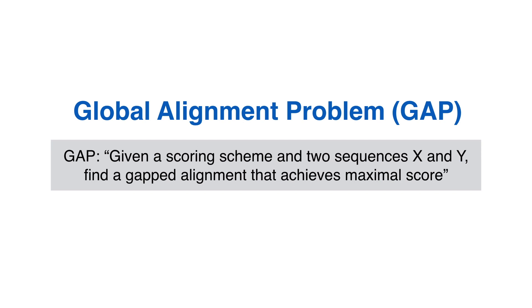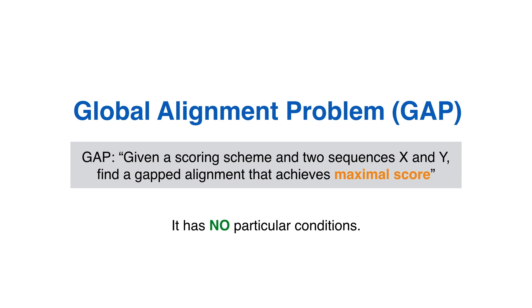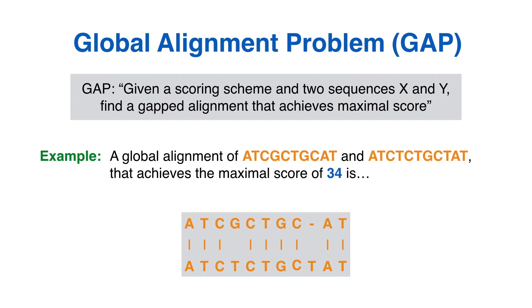This is the base pairwise sequence alignment problem. It has no particular conditions. It simply compares two given input sequences, X and Y, from end to end, and returns an alignment with maximum score. All illustrations in this presentation use DNA sequences and the scoring scheme proposed here — each match is rewarded with four points, and each mismatch or insertion of a gap is penalized with minus one point. The actual computational methods for finding the exhibited solutions are left for upcoming lessons. For now, we assume that such maximum score is known.